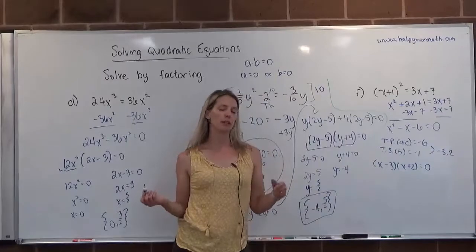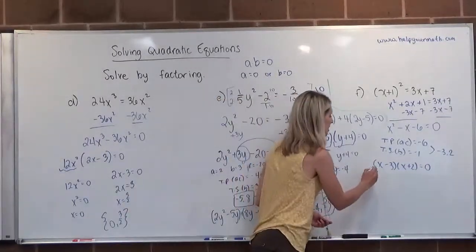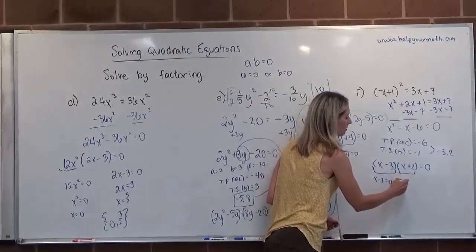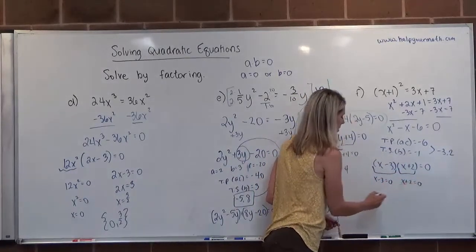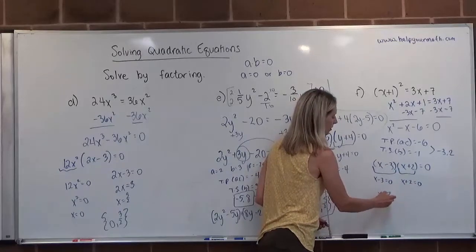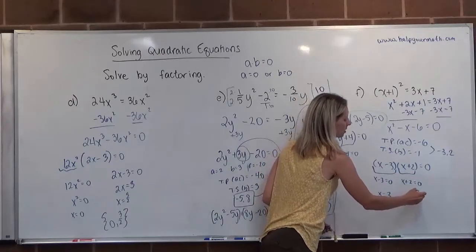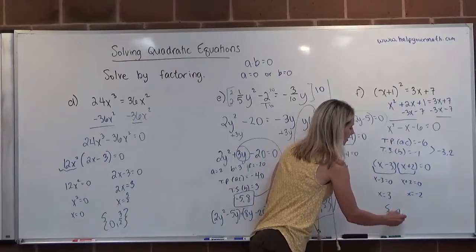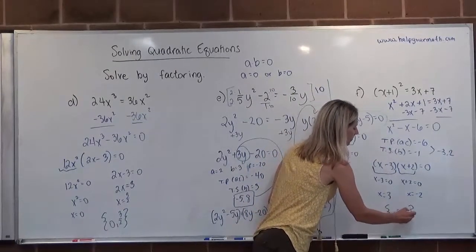Now we have two things, and when we multiply them, their product is 0. So that means either x minus 3 is equal to 0 or x plus 2 is equal to 0. Here it would be x equals 3. Here we would subtract 2 from both sides and we would end up with negative 2. So the two solutions would be negative 2 and positive 3.